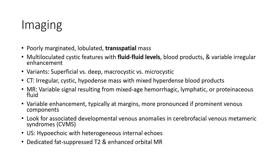Imaging: fully lobulated, globulated, transpatial mass. Multi-lobulated cystic features with fluid levels, blood products, and variable contents. Classification includes superficial versus deep, and macrocystic versus microcystic. On CT: irregular cystic hypodense mass with mixed hypodense blood products. Variable density resulting from mixed-age hemorrhage, lymphatic or proteinaceous fluid.